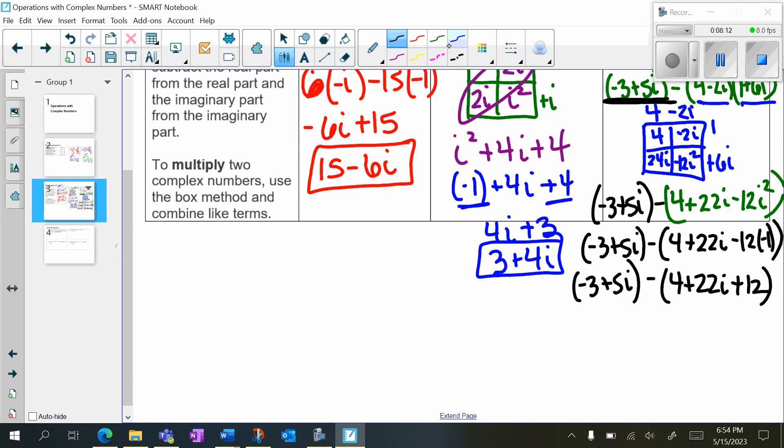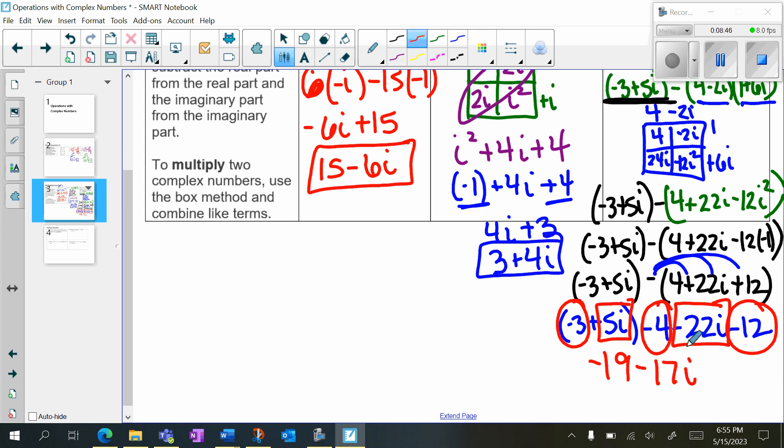And because there's subtraction, we want to distribute that. So I'm going to have negative 3 plus 5i minus 4 minus 22i minus 12. Then we want to combine like terms. So we have negative 3, negative 4, negative 12. That gives me negative 19. And then 5i and negative 22i gives you negative 17i. And that's in a plus bi form.